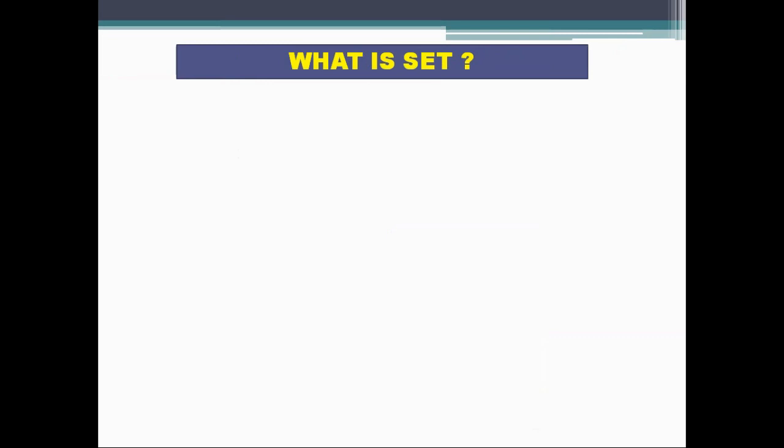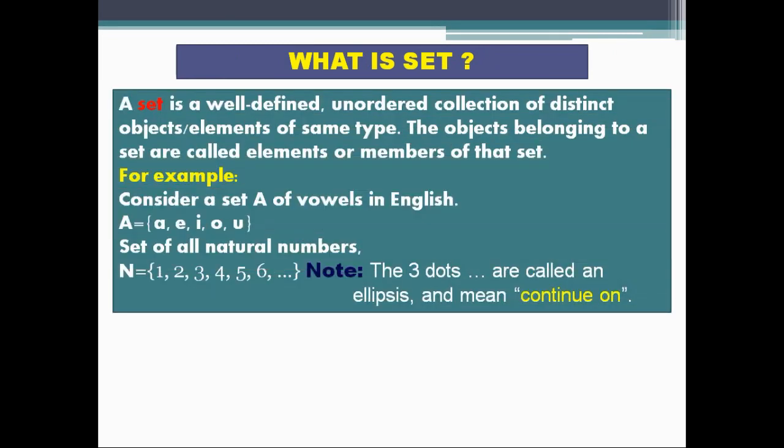Here we will see what is set. Let's see the definition. A set is a well-defined, unordered collection of distinct objects or elements of same type. It means a set is a well-defined and unordered collection of distinct elements of the same type. The objects belonging to a set are called elements or members of that set. The objects that belong to a set are called its elements. So let's understand this with an example.